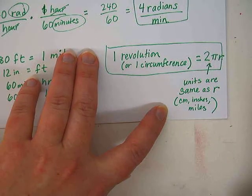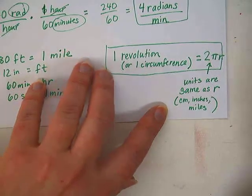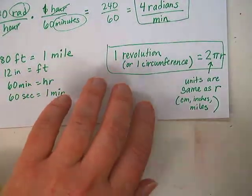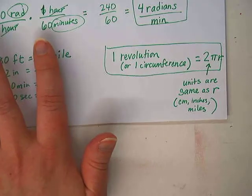So do I want to make a note of that? One revolution is equal to 2 pi r. And the units for that are whatever r is. So r is, so like I just said, centimeters, inches, miles, whatever r happens to be, that's what this answer's unit is. It's really important to pay attention to units when you're doing conversion factors.